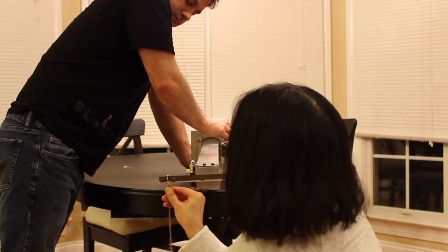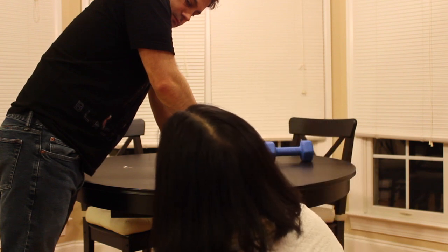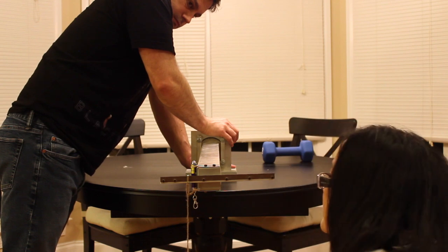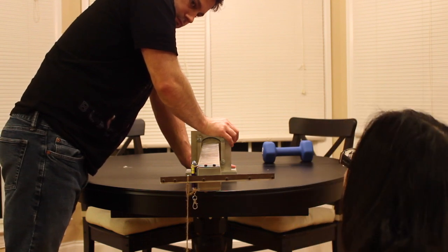And finally we'll look at the shear center, which is roughly around here. So we can see that we have nearly pure bending without any twisting.